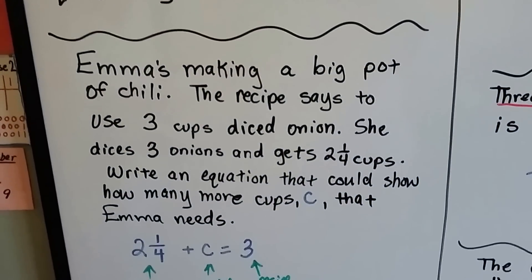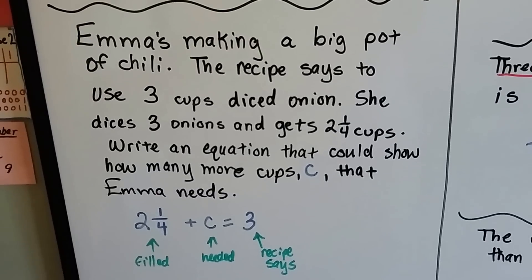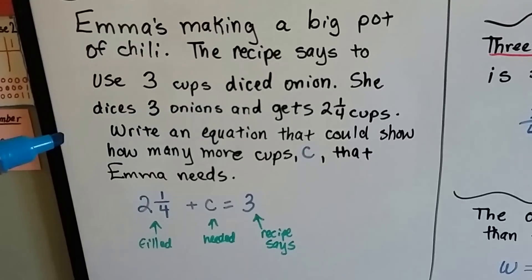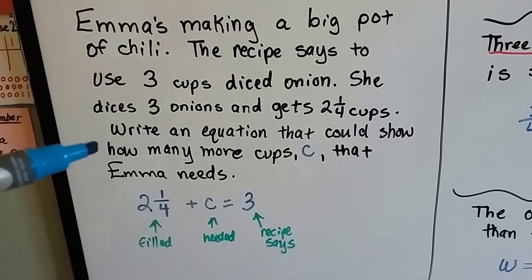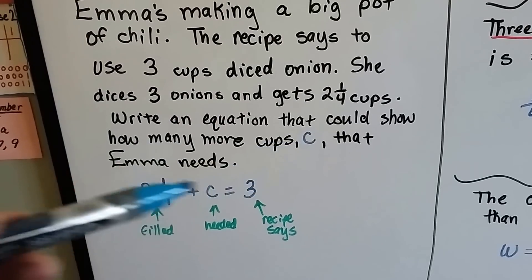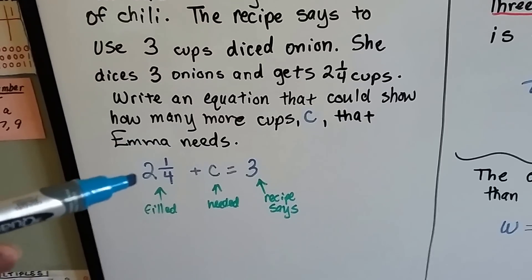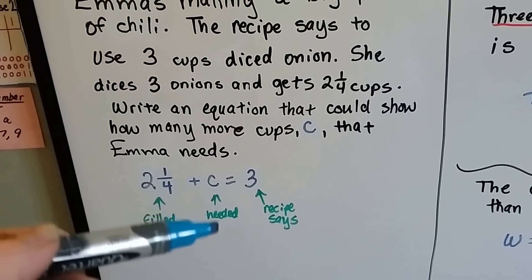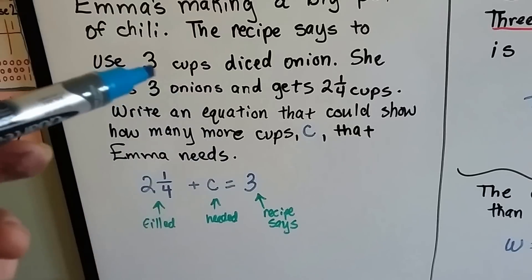Emma's making a big pot of chili, and the recipe says to use three cups of diced onion. She dices three onions and gets 2 1⁄4 cups. Write an equation that could show how many more cups C that Emma needs. So, she's filled 2 1⁄4 cups, plus C, what's needed, would be the three that the recipe's called for.